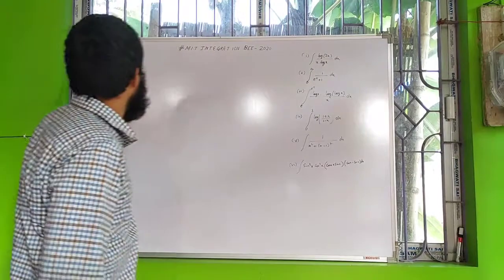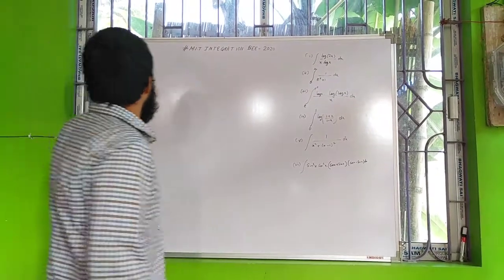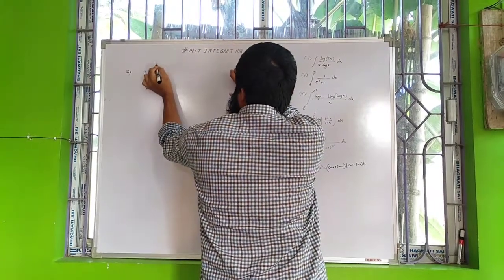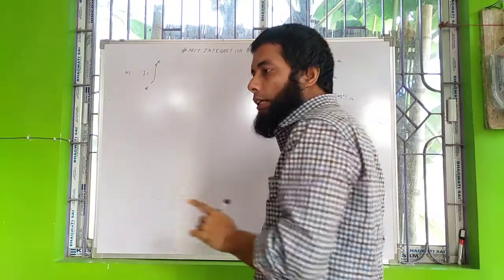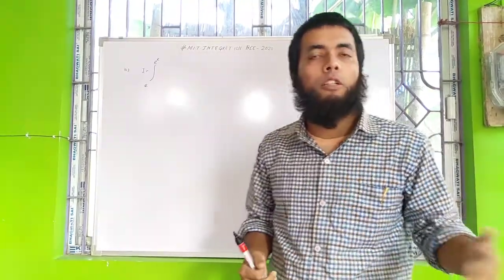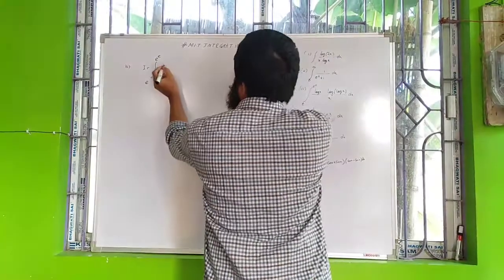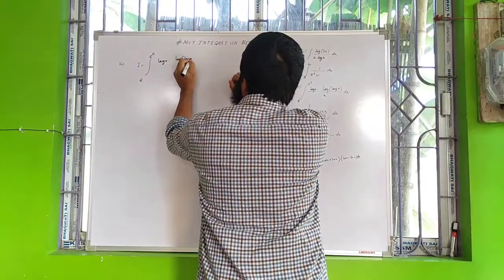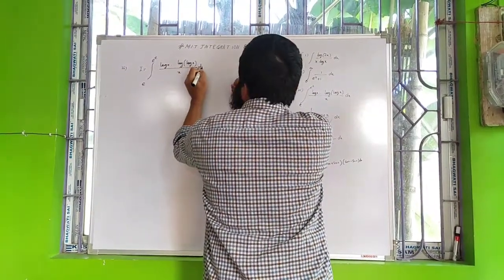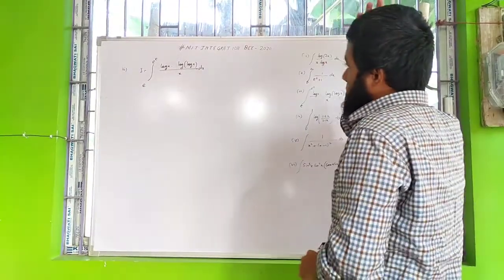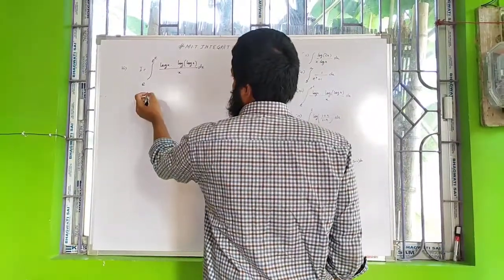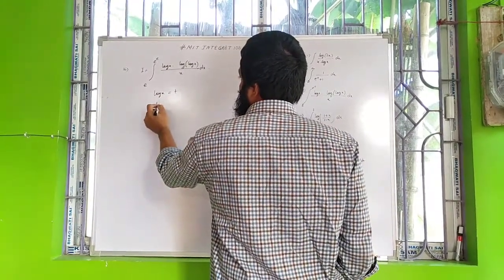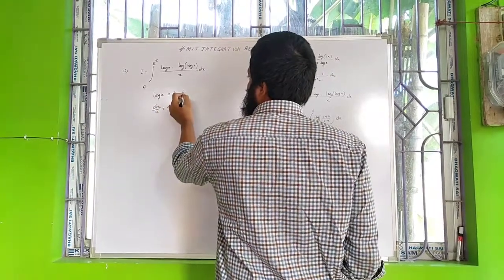Let us solve the third problem, which seems interesting. The lower limit of integration is e and the upper limit is e^e. Remember, e is an irrational number with value approximately 2.718. We need to solve the integral of log(x) · log(log x) / x dx. Here I will take the assumption: let log x = t, so dx/x = dt.